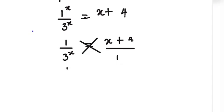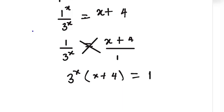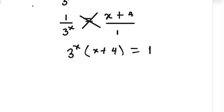Let's do cross multiplication. So we're going to have 3^x multiply x plus 4. Then we're going to have 1 times 1. Moving on, we have x plus 4 multiplied by 3 to the power of x, then equals 1.